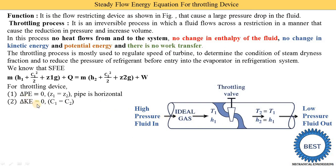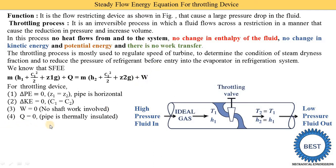Work done is zero — no shaft work is involved, so the W term on the right side equals zero. Q is also zero — the pipe is thermally insulated, meaning the throttling valve, capillary tube, or porous plug is completely insulated with no heat interactions. Putting all these values into the above equation, C1 and C2 cancel, Z1 and Z2 cancel, Q and W cancel.